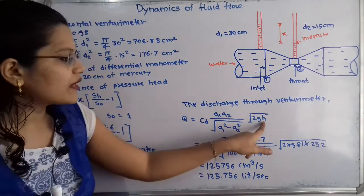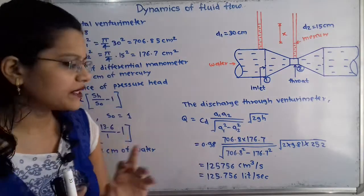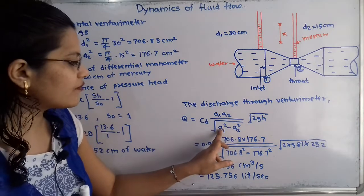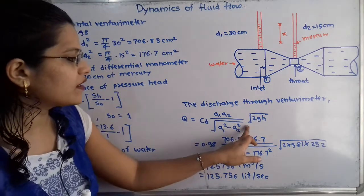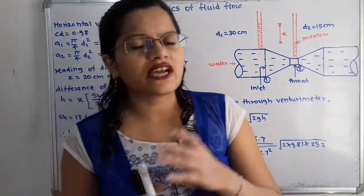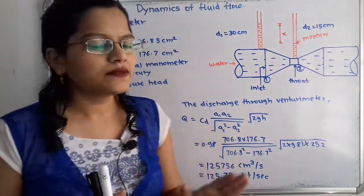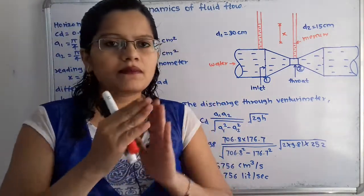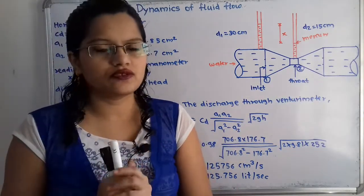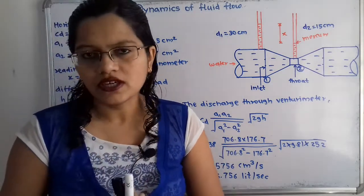To calculate the flow rate Q through the venturimeter, we need to calculate h first. The formula for discharge through a venturimeter is: Q equals Cd times a1 times a2, divided by the square root of (a1 squared minus a2 squared), multiplied by the square root of 2gh. Here h is the difference of pressure heads, that is p1 by ρg minus p2 by ρg.